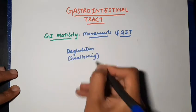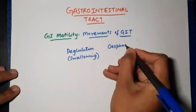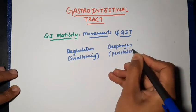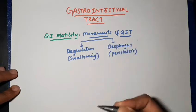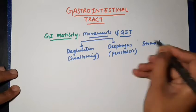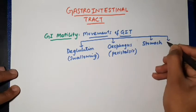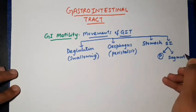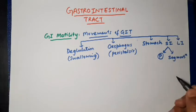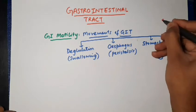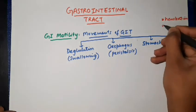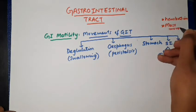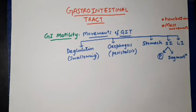We'll start with deglutition, which is the movement that occurs initially right after we take food. After that we have movement of the esophagus, that means peristalsis. Then we have movements of the stomach, then movements of the small intestine — peristalsis and segmentation. At last we have movements of the large intestine, which mainly shows two types: haustrations and mass movements. All these movements will be discussed in detail in subsequent sections. First we'll cover some basic knowledge about how these movements are caused, how action potential is generated.